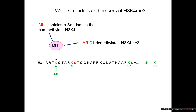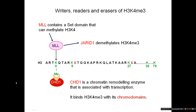Looking specifically at lysine 4 methylation — MLL is a writer that methylates lysine 4 of histone H3; it contains a SET domain, which is the catalytic domain that performs the methylation. JARID1 is the demethylase. MLL is often upregulated or mutated to be more active in cancer. Methyl lysine 4 can be bound by a protein called CHD1, which has a chromodomain that binds methyl lysine — so to remember: bromodomains bind acetyl lysine, but chromodomains bind methyl lysine. CHD1 is a remodelling complex associated with transcription, but it's not the only protein that binds methylated lysine 4.